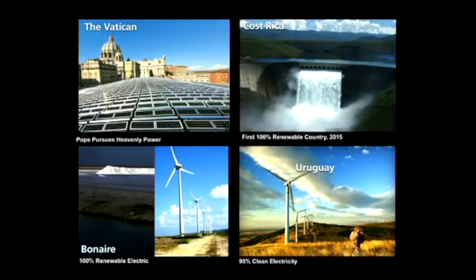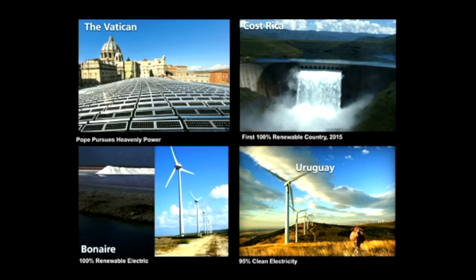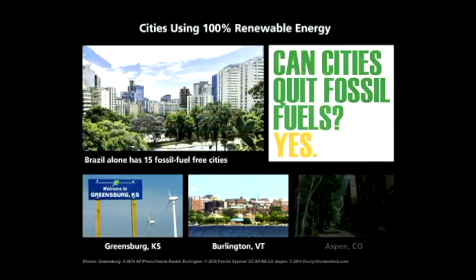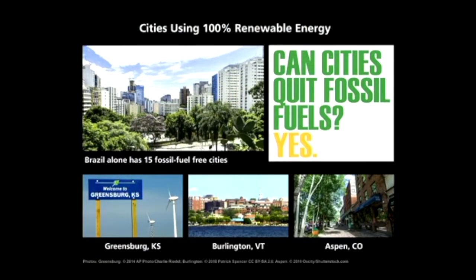Vatican City has pledged to be the first carbon-neutral country — and they do have God on their side. But the Costa Ricans beat them in 2015 by becoming the first 100% renewable energy country. Uruguay is up to 95% clean energy. And Bonaire, a little island in the Dutch Caribbean, runs on 100% renewables using a combination of wind power and backup biodiesel generators using fuel made from algae grown in their salt flats. Renewable energy countries are already happening.